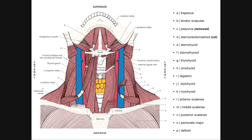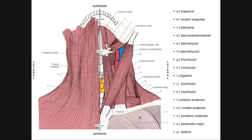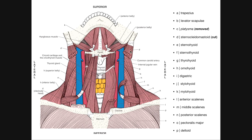Looking at the second figure: A is trapezius, B is levator scapulae — originating on upper cervical vertebrae and inserting on the superior aspect of the medial border of the scapula. In this picture the platysma has been removed, and the sternocleidomastoid has been cut. We can still identify the SCM by its insertion on the mastoid process and its origins on the manubrium and medial clavicle.